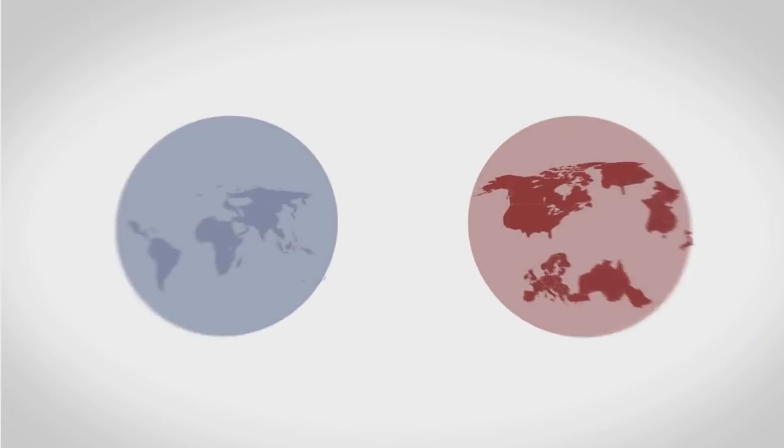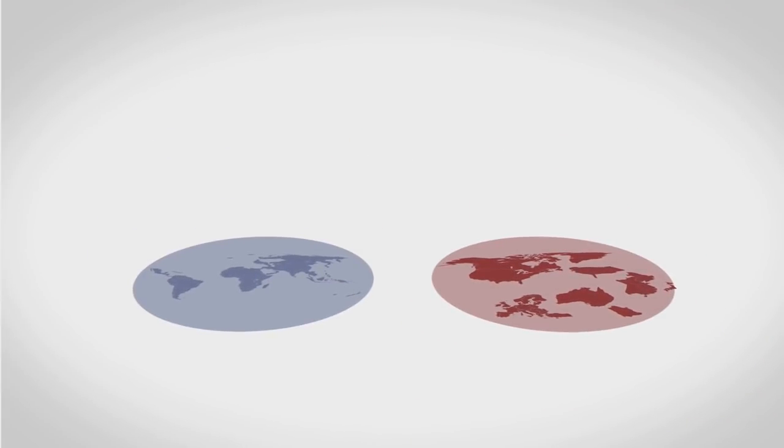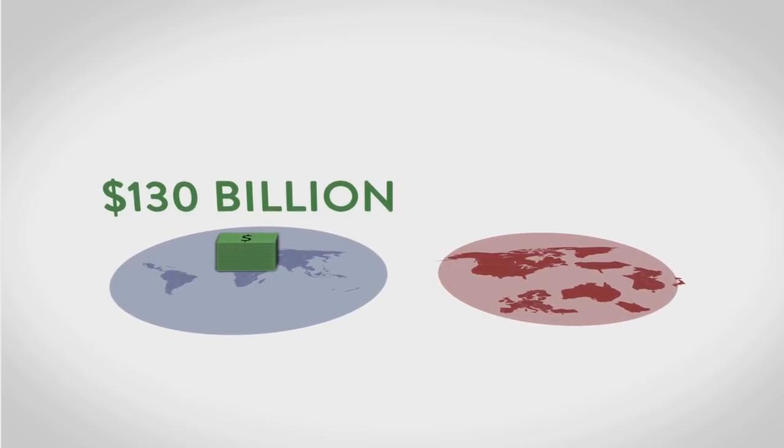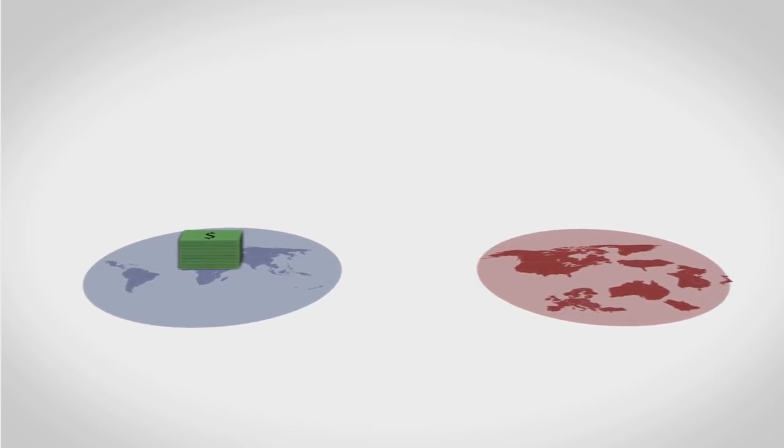Rich countries try to compensate for this by giving aid to poor countries. About $130 billion each year. That's a lot of money. So then why does the wealth gap keep getting bigger?